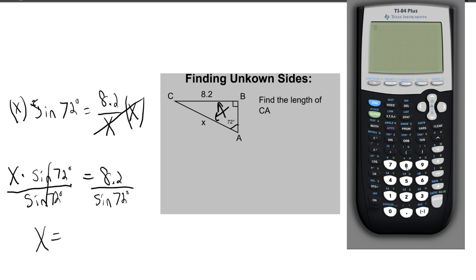Go in your calculator. You have 8.2 divided by and just to be careful I'm going to put everything in parentheses. So sine of 72 and close it with two parentheses since if you have two on the left you need two on the right. Hit enter and you get 8.62.